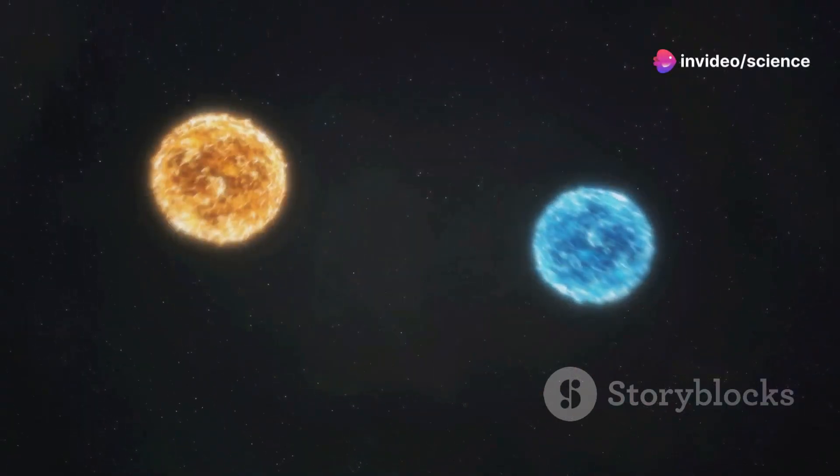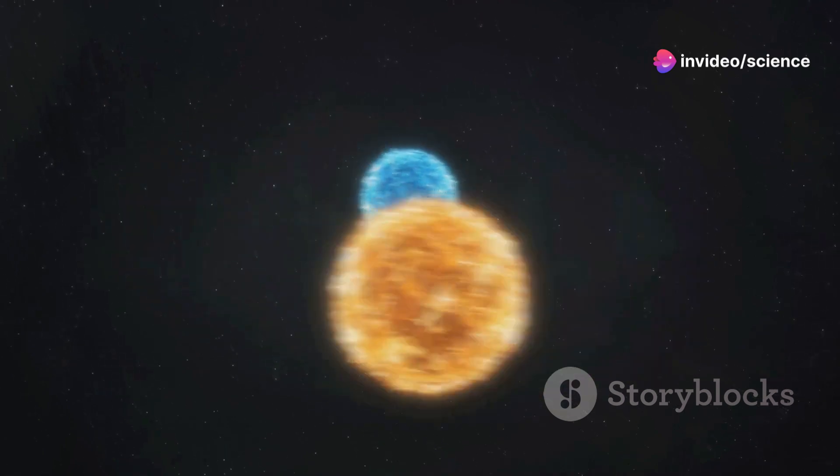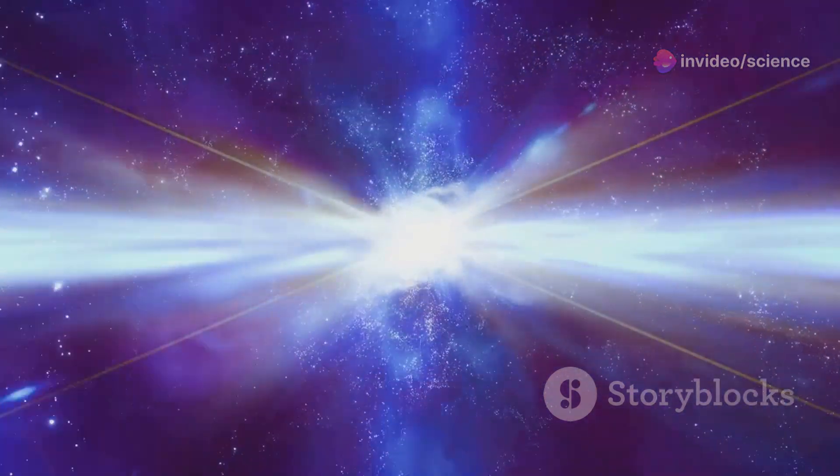This extreme density causes the light they emit to shift towards the blue end of the spectrum. It's a bit like how water can bend light, except on a much more intense scale.